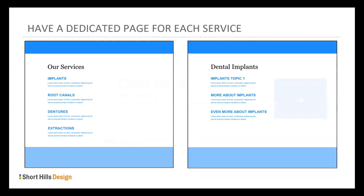Please have a dedicated page for each service. Look at this one on the left: 'Our services — implants, root canals, dentures, and extractions.' What is that page about? Compare it to a dedicated dental implants page, which covers implants topic one, more about implants, even more about implants. If someone searches for dental implants in your area, Google will choose the page dedicated to implants over the one where implants is just one of four topics.